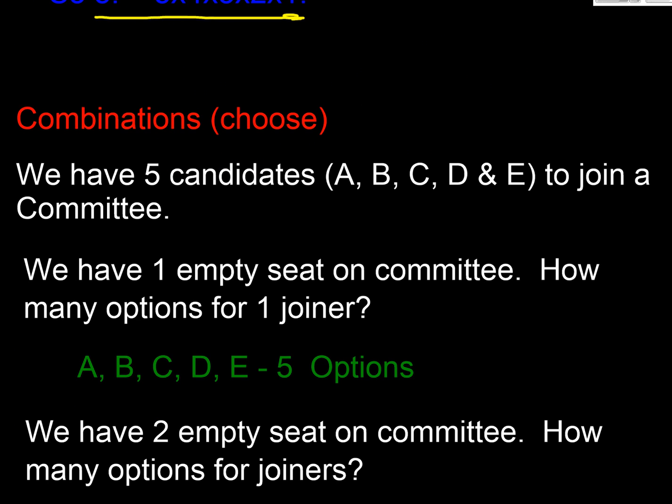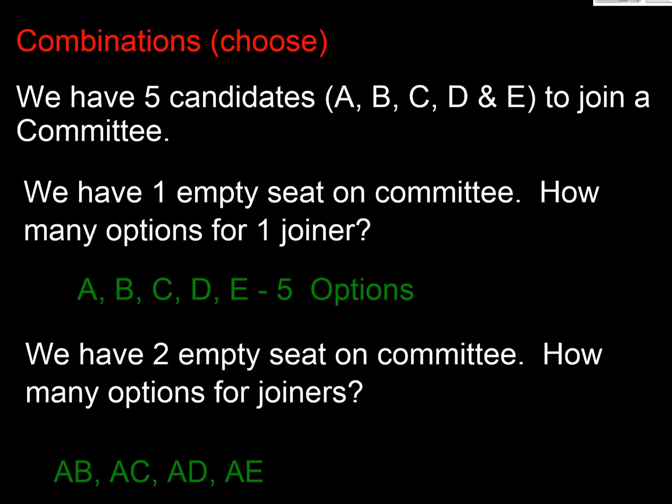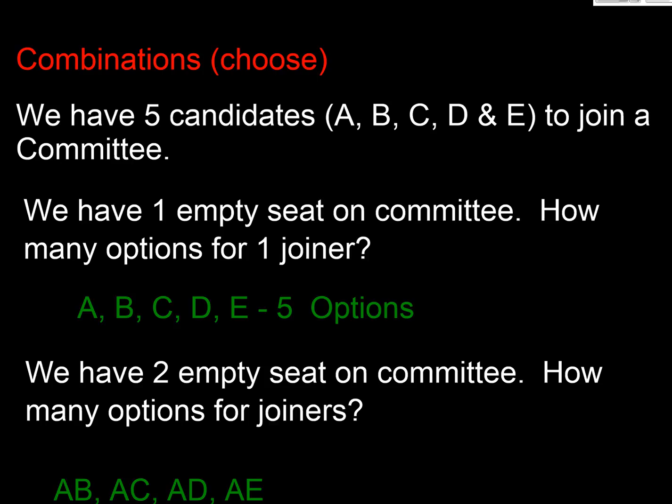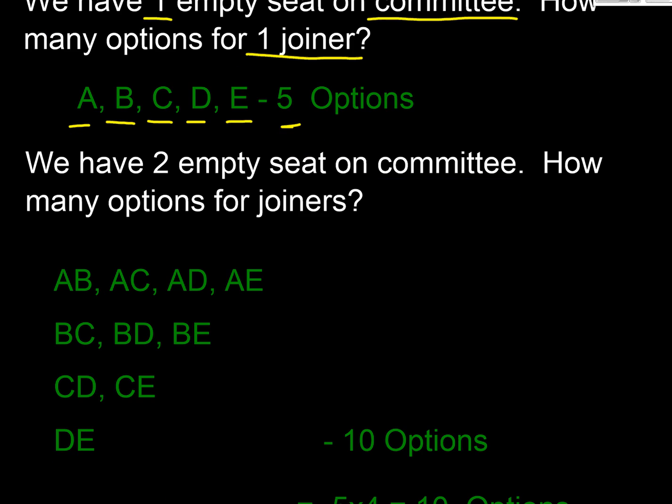Let's have a go at combinations, often sometimes called choosing as well. And the difference here is we don't care which order this comes about. So let's see a very similar problem. We've got five candidates for a committee and the candidates are once again, A, B, C, D and E. We have one empty seat on the committee to fill. How many ways for one joiner? Well, either A could join or B could join or C could join or D could join or E could join. So we're back to five options as we saw in the permutations.